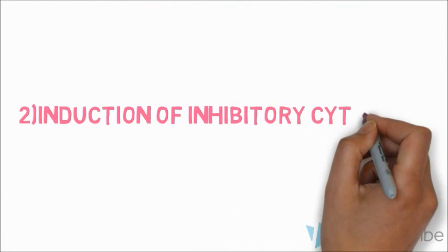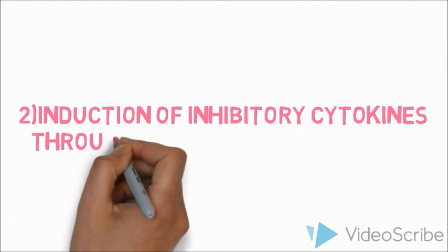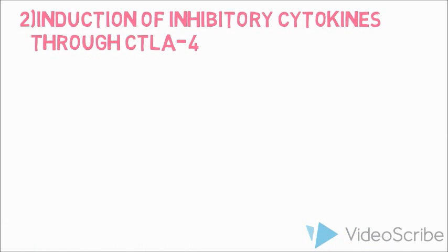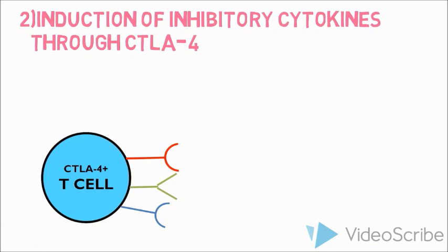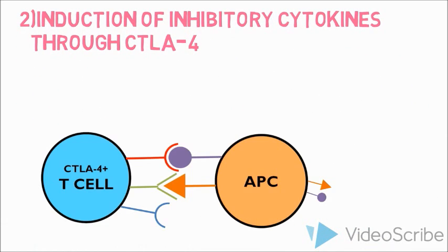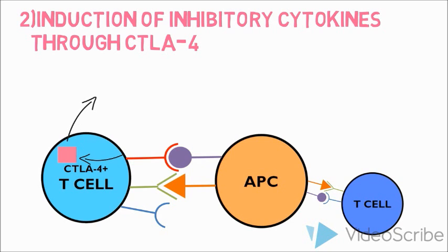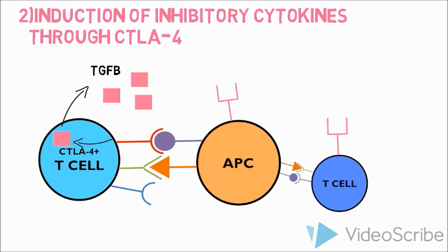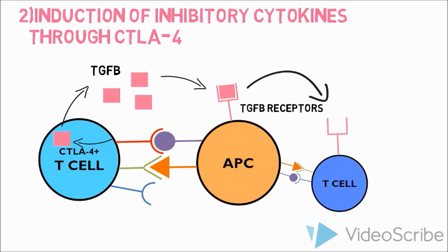Induction of inhibitory cytokines through CTLA-4: CTLA-4 binds to CD80/86, which stimulates the T-cell to produce TGF-beta. The TGF-beta binds receptors on the APCs and T-cells, leading to inhibition.